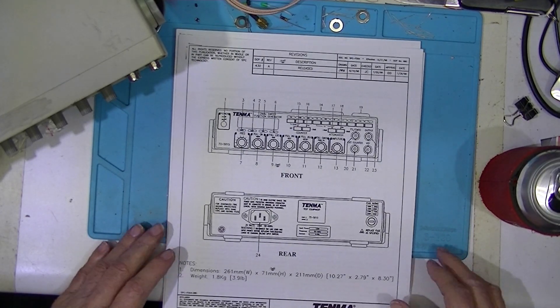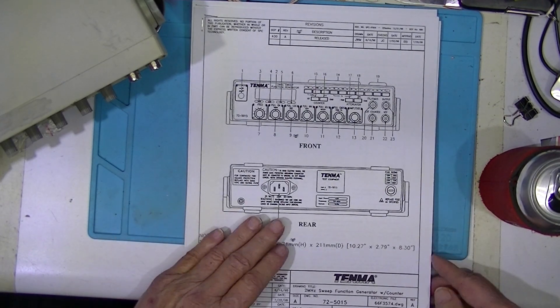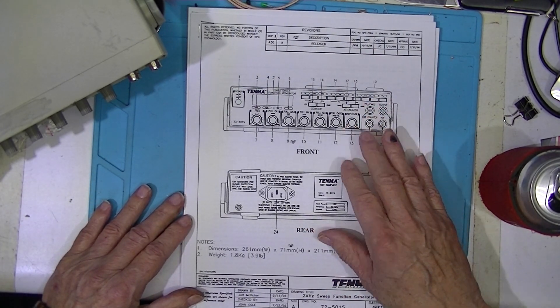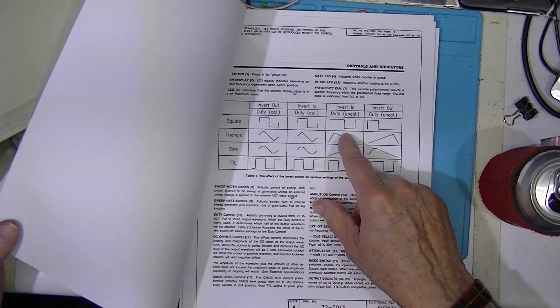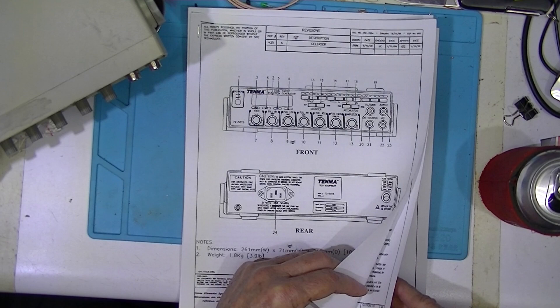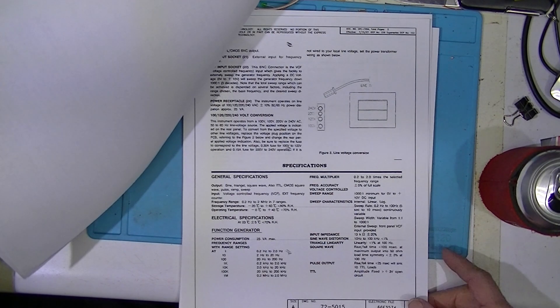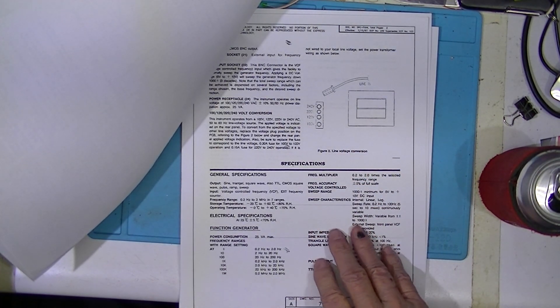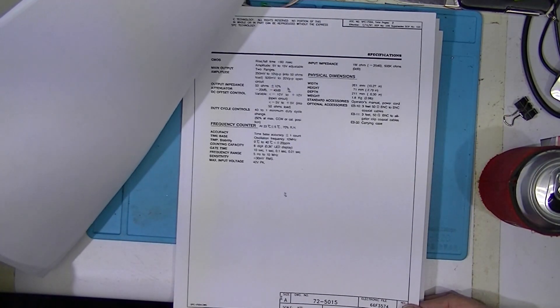Searching around on the web, I found this Tenma 4-page document. It's got a front and back panel, some dimensions, a little bit of an explanation of what the knobs are and what kind of signals it generates. Specifications, and that's all they have, just specifications.